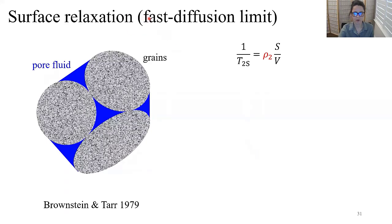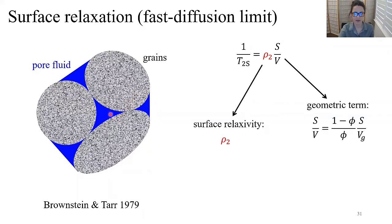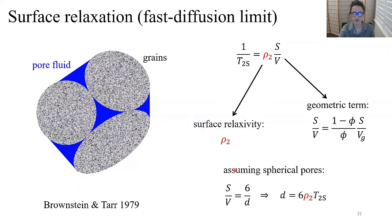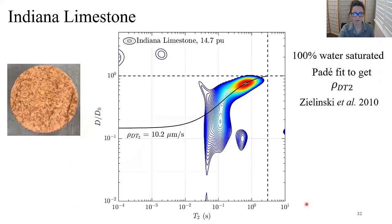In the fast-diffusion limit, when the molecule bounces off pore walls many times before relaxing, the Brownstein-Tarr assumption is that pores act as if disconnected. Surface relaxation depends on the surface-to-volume ratio (a geometric term) and surface relaxivity ρ (a function of fluid-surface interactions). Assuming smooth spherical pores, S/V is inversely proportional to pore size, and the pore size distribution can be determined from the T2 distribution if surface relaxivity ρ is known. The standard method for determining ρ is BET gas absorption; another is from DT2 maps of fully brine-saturated cores.